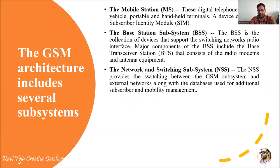Next comes the Network and Switching Subsystem, or NSS. This provides switching between the GSM subsystem and external analog networks with databases. We have several registers such as HLR (Home Location Register) and VLR (Visitor Location Register). The network subsystem maintains a database of subscribers — tracking outgoing calls, incoming call numbers, and all data related to calls.